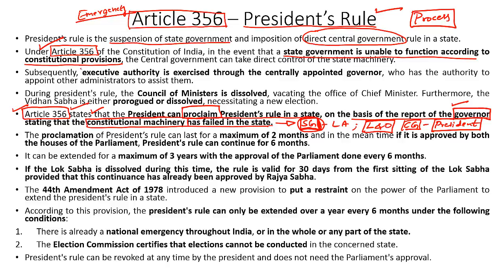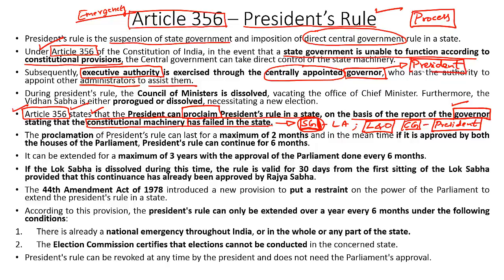Once President's rule is imposed, the executive authority in the state is exercised by the governor, who is essentially appointed by the central government. The governor in turn can appoint a few administrators to assist him in carrying out the executive functions of the state, and he will also be bound by the decisions of the President of India, who in turn is guided by the aid and advice of the Union Council of Ministers.